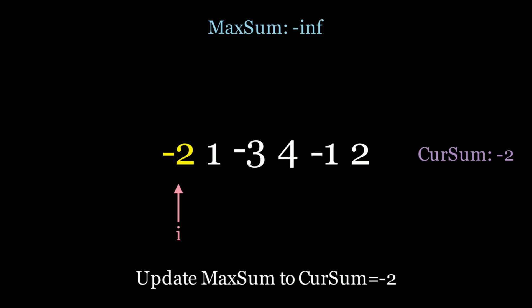Now the next step is we're going to have to update the maximum sum, right? So is negative 2 greater than negative infinity? It is, and that's actually why we initialize it to negative infinity since any value will be larger than that. So let's update the maximum sum if the current sum is greater than the maximum sum. So let's update that to negative 2.